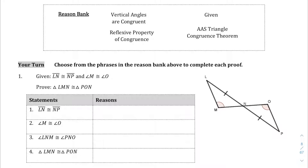We're given two statements: that side LN is congruent to NP, and that angle M is congruent to angle O. I'm going to highlight it — this side LN, you see the hash mark, is congruent to NP. That's the first statement, and that's a given. Here we have another statement: angle M is congruent to angle O, which is also a given, and we can see it in the diagram. So we're going to write given for that as well.